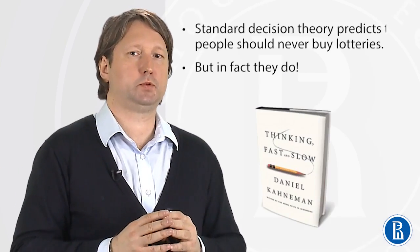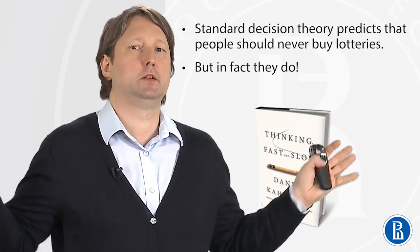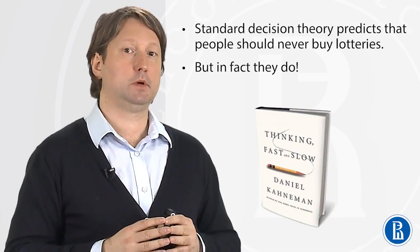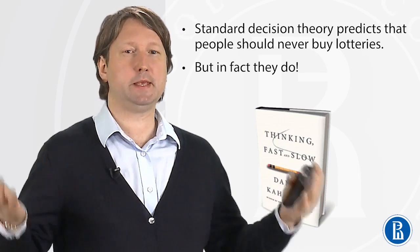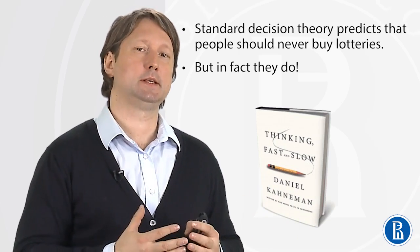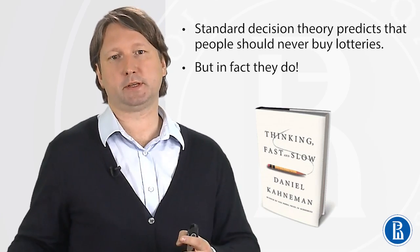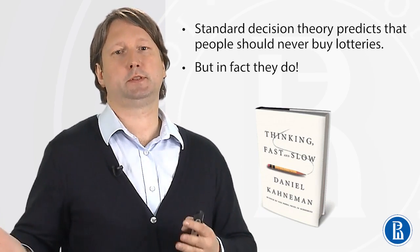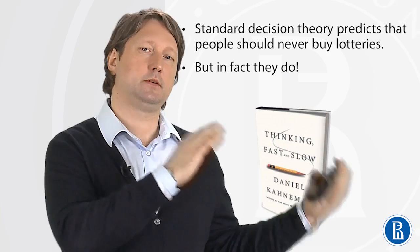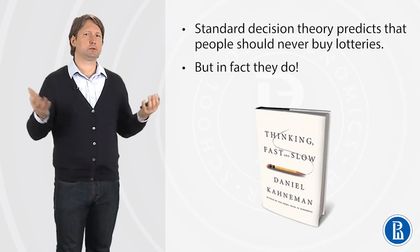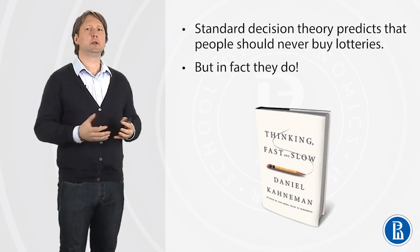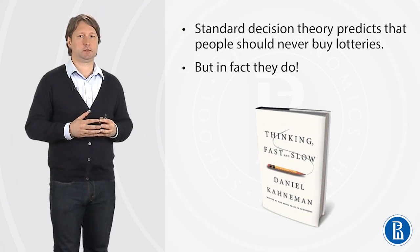Standard decision theory predicts that people are risk averse, so people should never buy lotteries, for example. But they do buy lotteries. How can we explain these mixed tendencies of being risk averse in some situations or risk seeking in other situations? Perhaps we can use modern economic theory — the prospect theory.